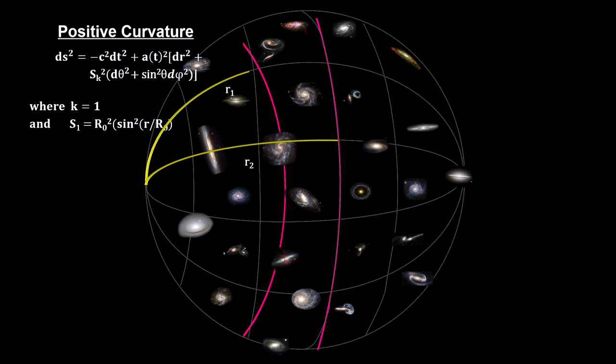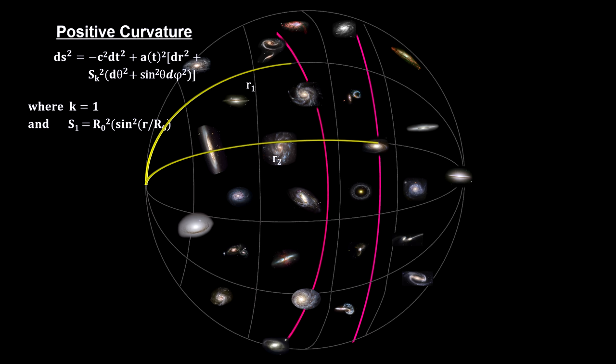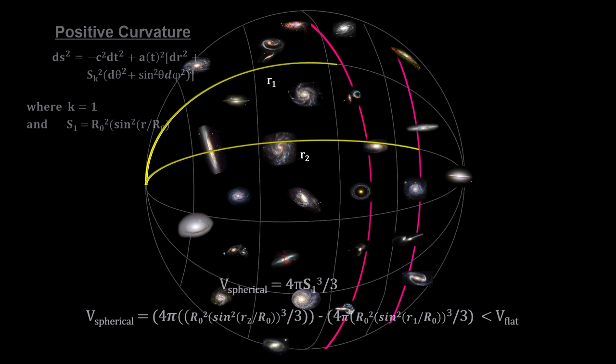If we look out into a spherical space, we would see the number of galaxies increase more slowly than for flat space, reach a maximum, and then come back down.